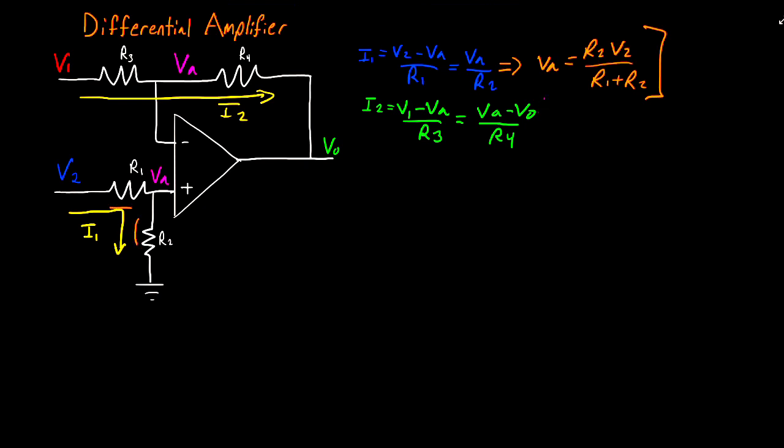So the next thing I'm going to do is to take these two equations and multiply them by R3 and R4. So that way I can get rid of the fractions and we'll get V1 R4 minus VA R4 is equal to VA R3 minus VO R3. Now what I'm going to do is multiply both sides by 1 over R3.